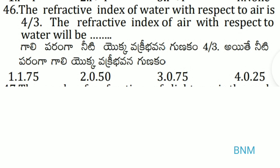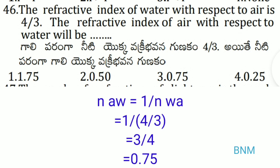Next one: the refractive index of water with respect to air is 4/3. The refractive index of air with respect to water will be: refractive index of air with respect to water = 1 / (refractive index of water with respect to air) = 1 / (4/3) = 3/4, that is equal to 0.75. That is the right answer.